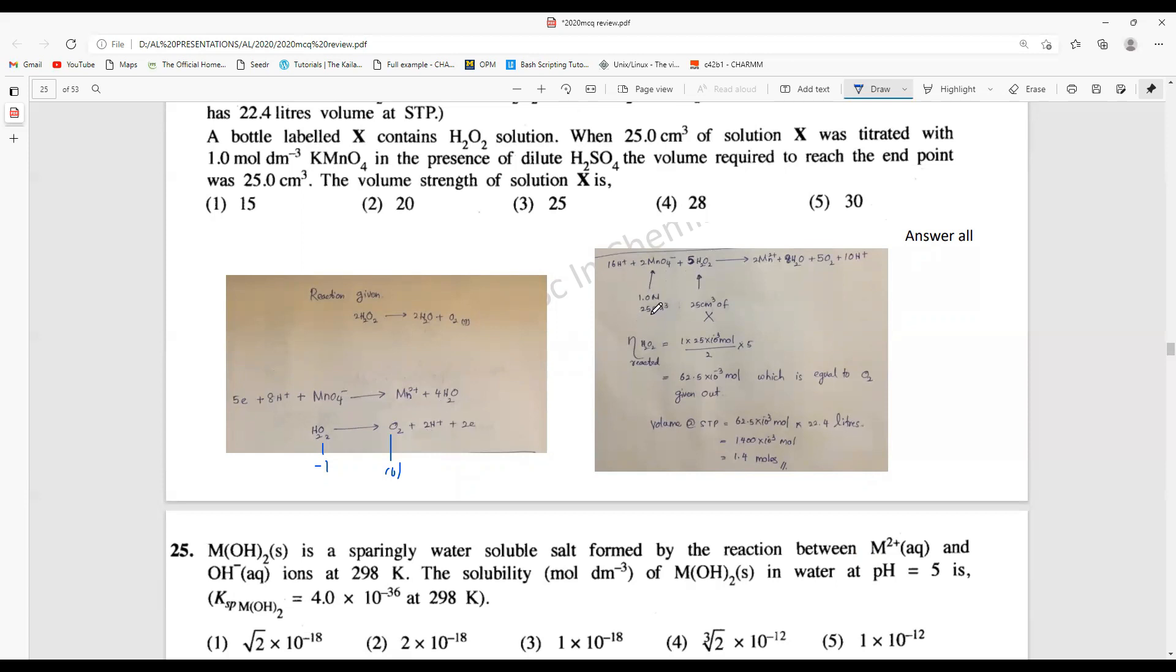Then I have this number of moles of KMnO4 that is used here. Based on the number of moles, I calculate the number of moles of H2O2 here. I divide by two, divide by five. This is the amount of reacted H2O2. The number of moles of oxygen that should be formed is very similar to the amount of H2O2 consumed.